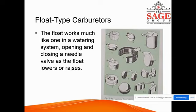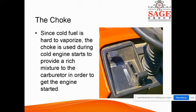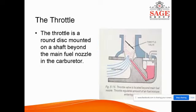Float type carburetors are a classic type of carburetor with an opening-and-closing needle valve linked to the float level. Regarding the choke: since cold fuel is hard to vaporize, the choke is used during cold engine starts to provide a rich mixture to the carburetor in order to get the engine started.